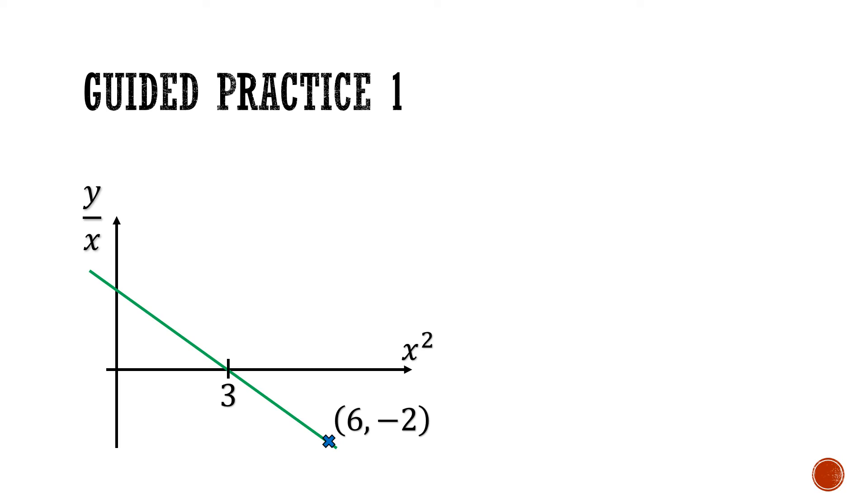The graph passes through the point (6, -2) and has a big X intercept at 3. We want to express y in terms of x.